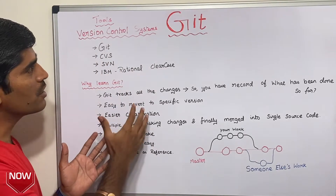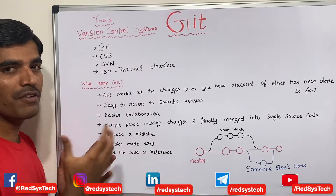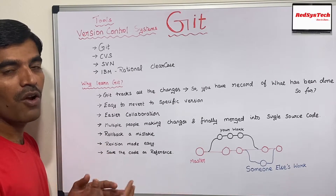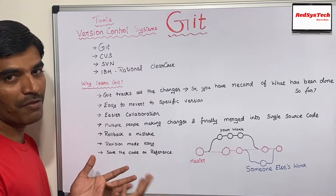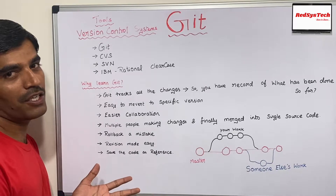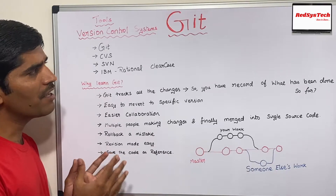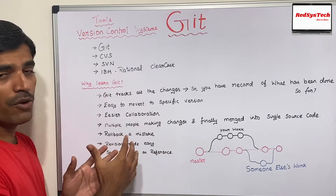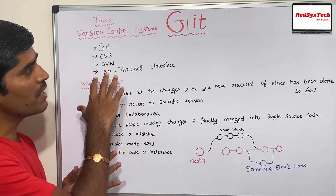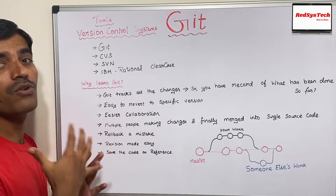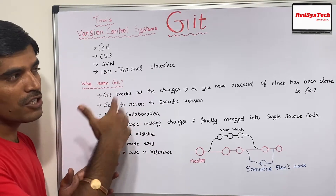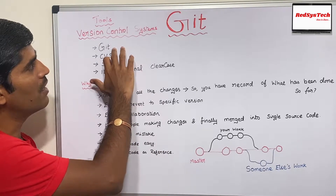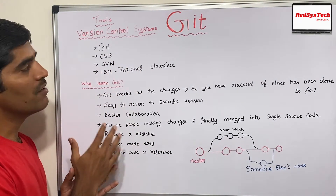First, we are going to learn about the different tools available in the market to achieve version control system. In our previous videos we have learned about what is version control system, the real-time benefits we get out of it, and the different types of version control system. Now, since we know that Git is one of the tools we can use to achieve distributed version control system.